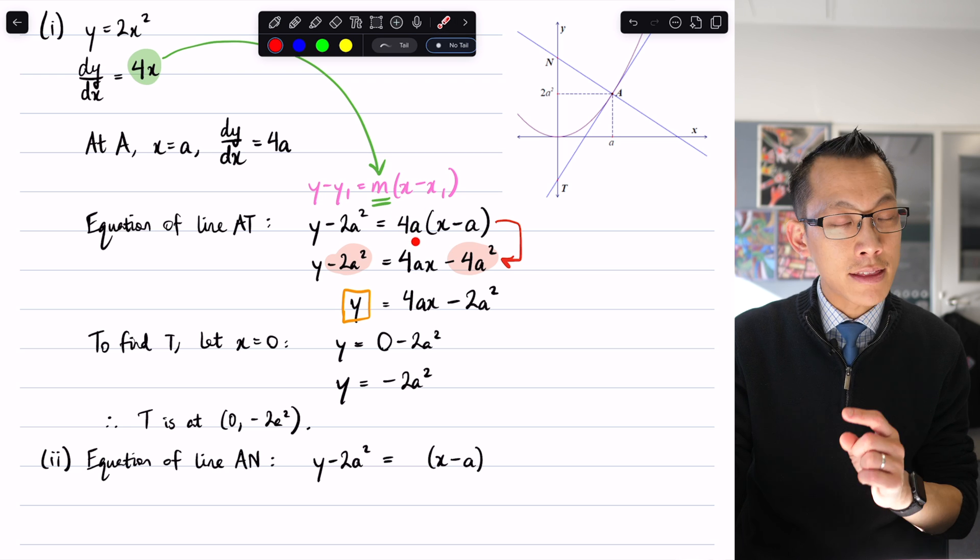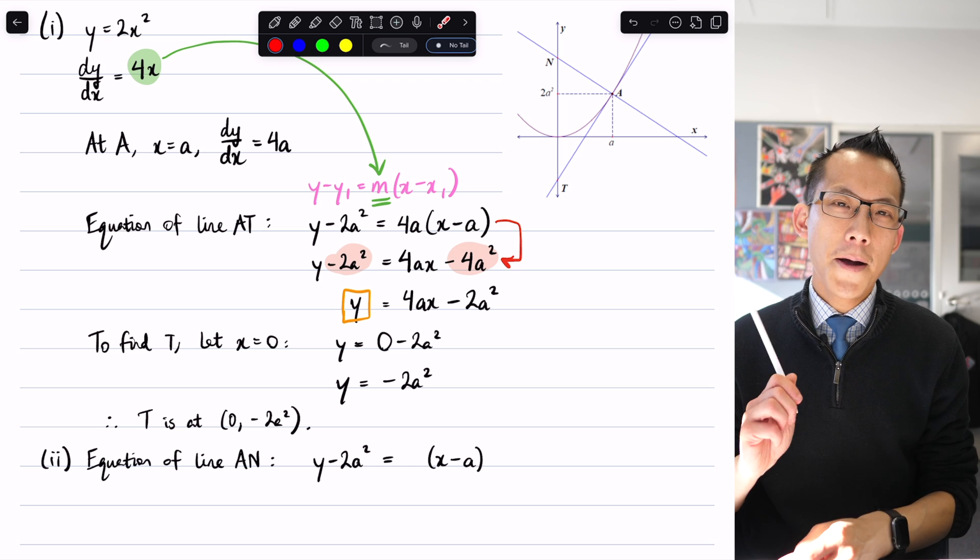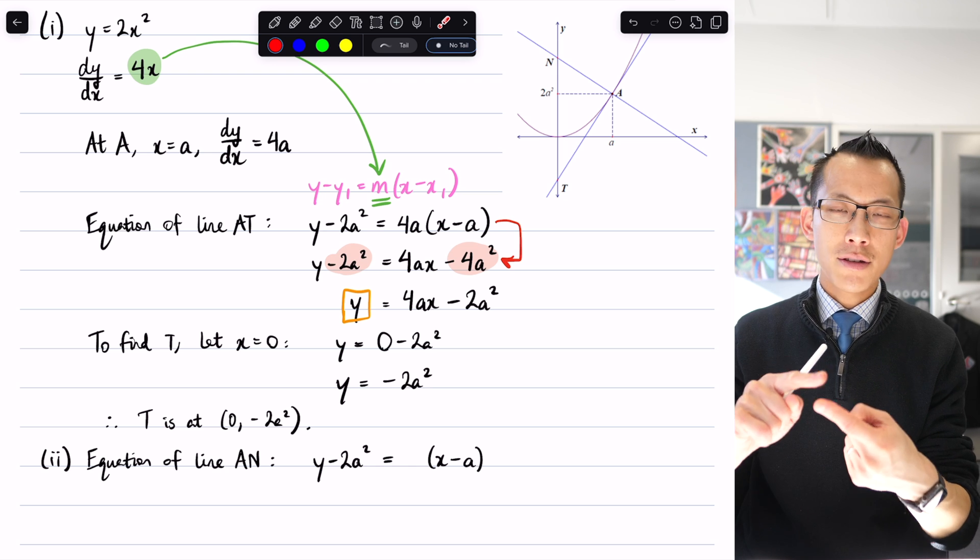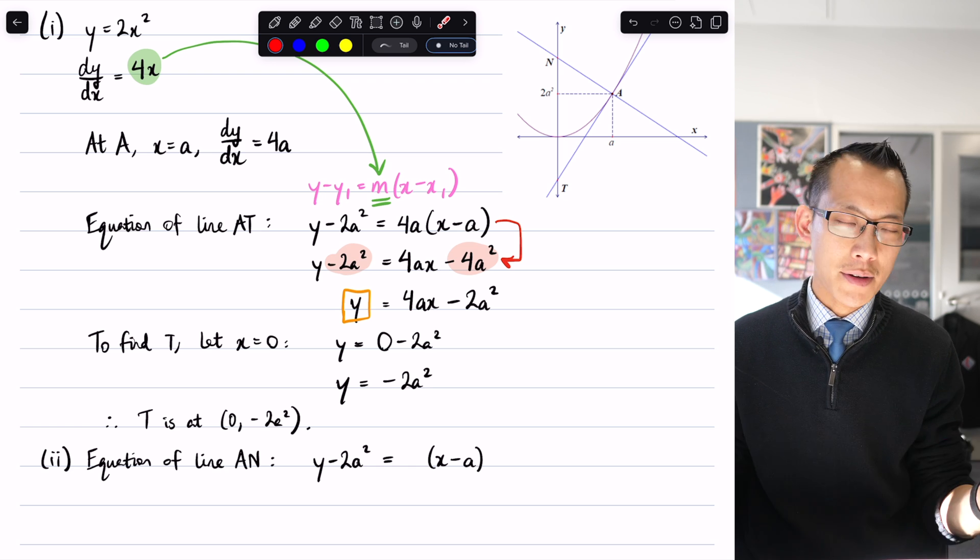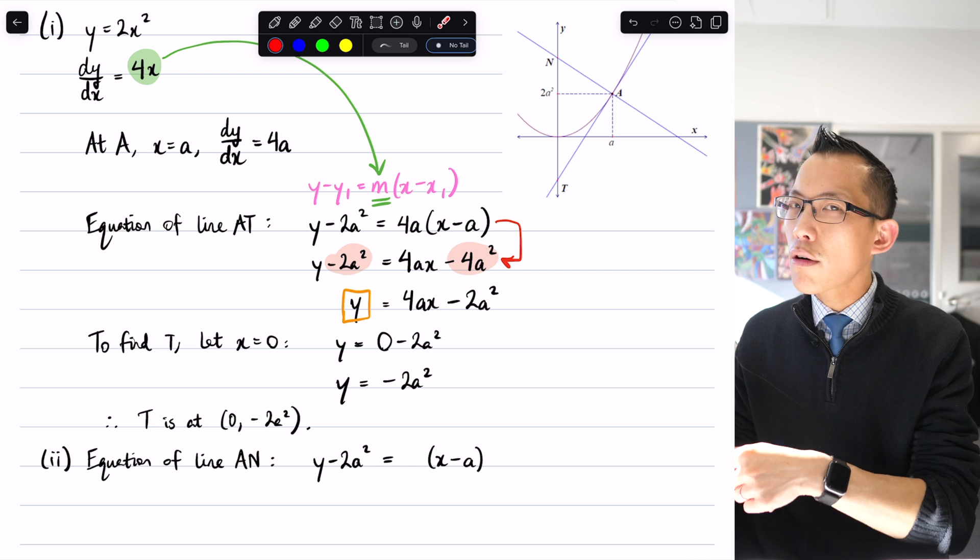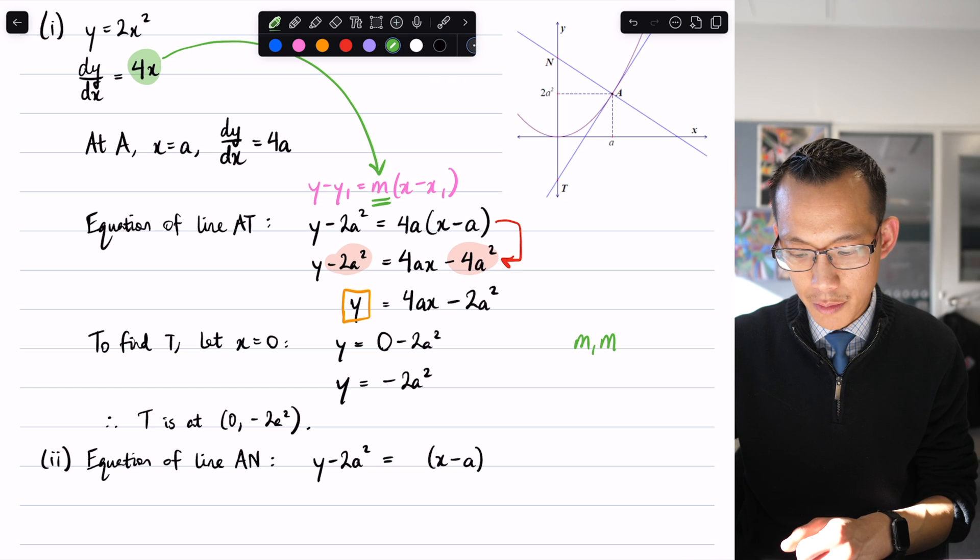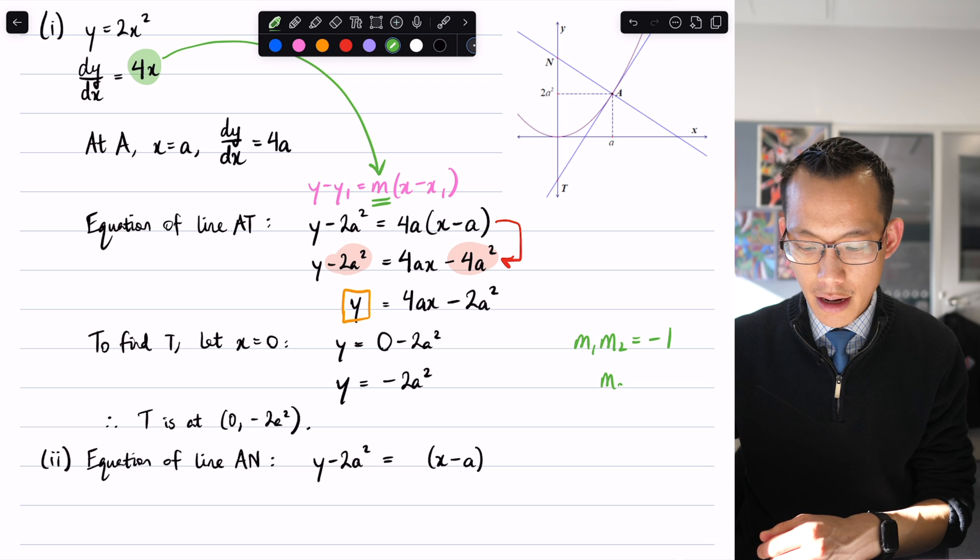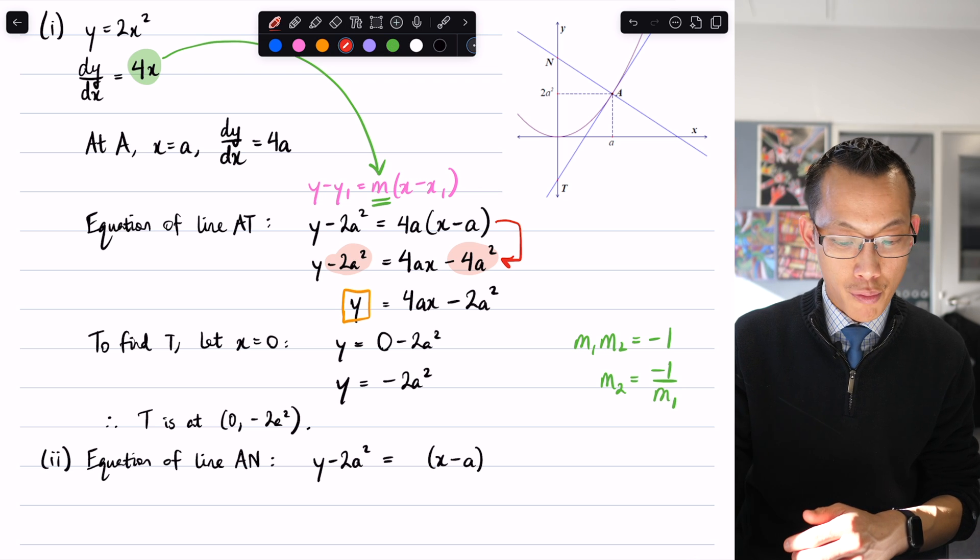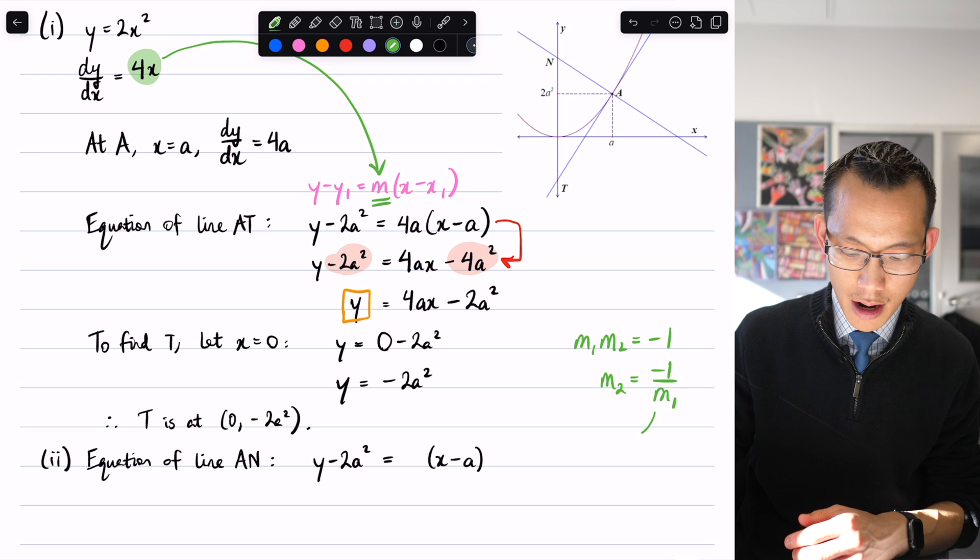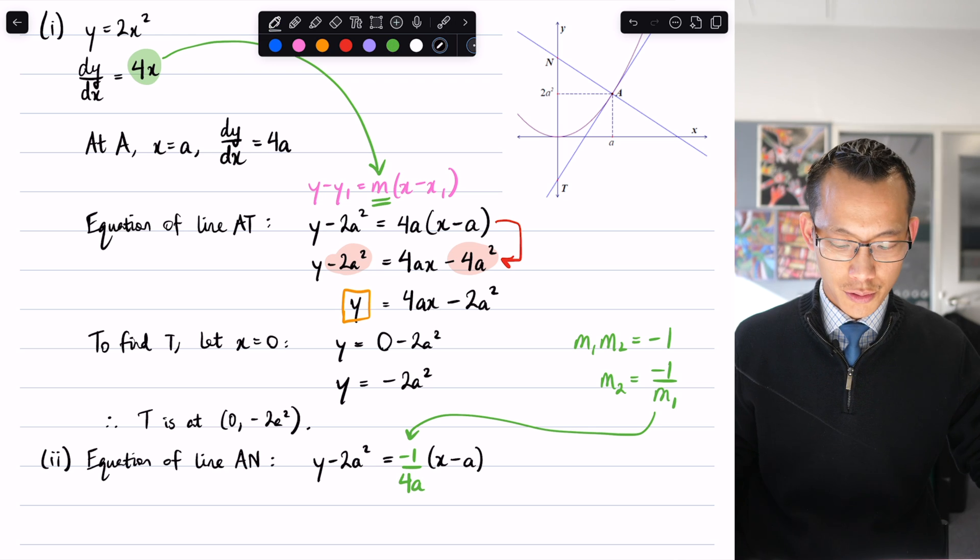Previously I used 4a, that was the gradient of the tangent. Going back to coordinate geometry, when you've got two lines that are perpendicular, you can think of it as you multiply their gradients and you get a product of negative 1. Alternatively, the new gradient, the perpendicular gradient, is the negative reciprocal. In this case I can do that pretty directly: it's negative 1 over 4a, that's the negative reciprocal.